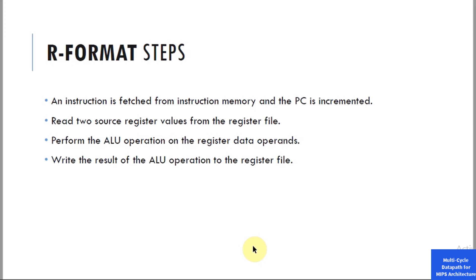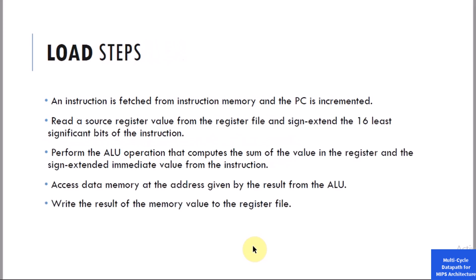So what are these fundamental steps? Let's take a look at what our instructions actually need to do. For the R-format type instruction, these are the steps: first, an instruction is fetched from instruction memory and the program counter is incremented. Then we read two source register values from the register file, perform the ALU operation on the register data operands, and finally write the result of the ALU operation to the register file.